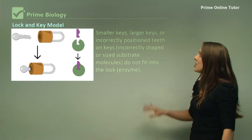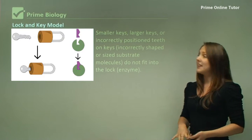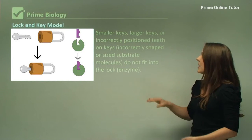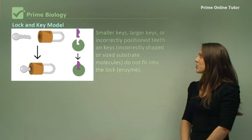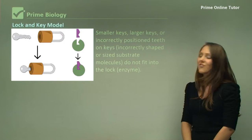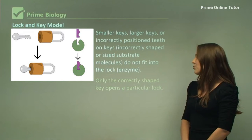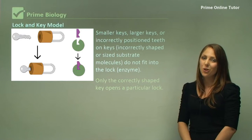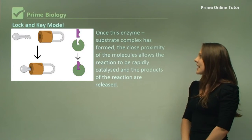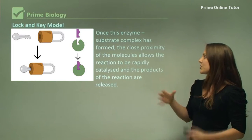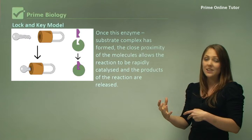Smaller keys, larger keys, or incorrectly positioned teeth on keys, or incorrectly shaped or sized substrate molecules, do not fit into the lock, the enzyme. Only the correctly shaped key opens a particular lock. Once this enzyme substrate complex is formed, the close proximity of the molecules allows the reaction to be rapidly catalyzed and the products of the reaction are released.